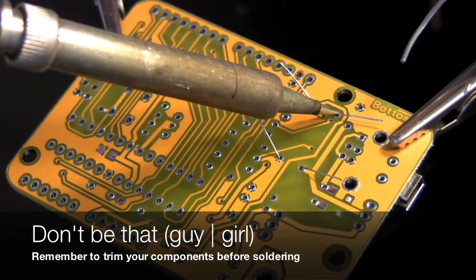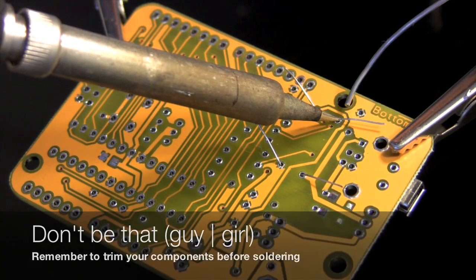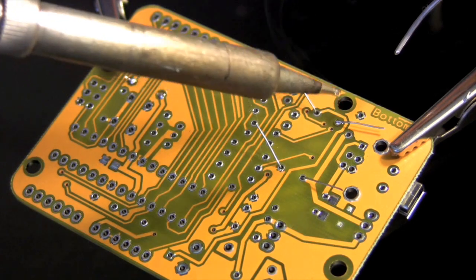As in my previous video, I forgot to trim the legs of my components before soldering. This actually caused problems on this first solder joint, as I'm not confident that it was as strong as it could be.